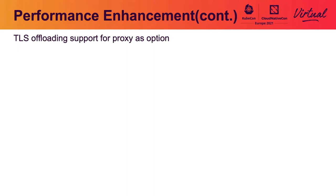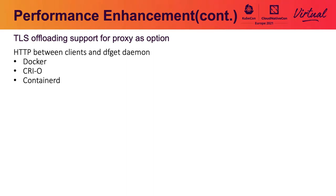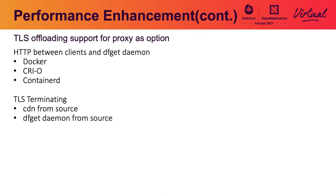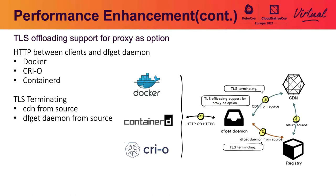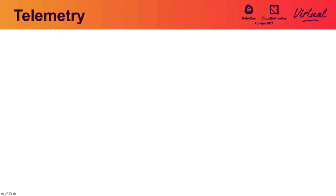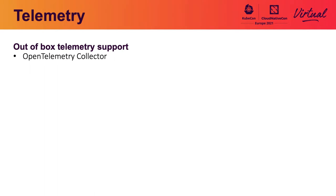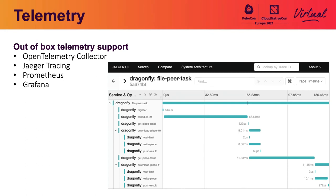For performance, TLS offloading is an option for DFGET proxy. When TLS offloading is enabled, clients like Docker daemon, CRI daemon, and Containerd daemon communicate with DFGET daemon using plain HTTP instead of HTTPS. TLS termination is done when CDN or DFGET daemon downloads from the source. For tuning performance, DFGET is out-of-the-box with telemetry. In V2, we support OpenTelemetry Collector, Jaeger tracing, Prometheus, and Grafana.